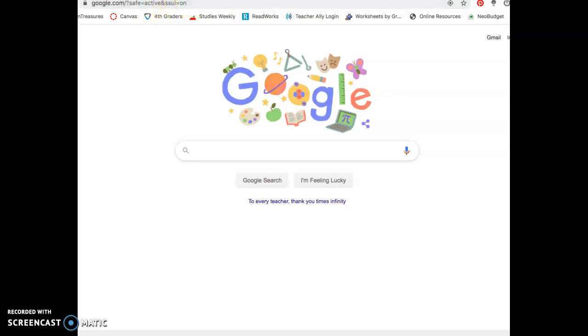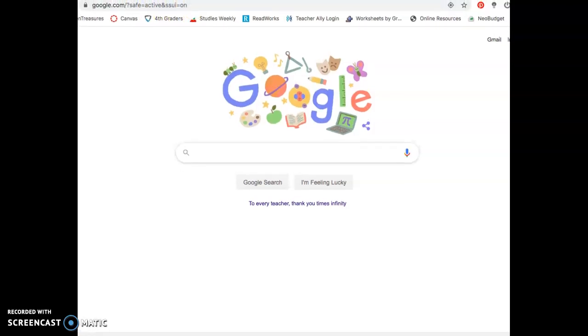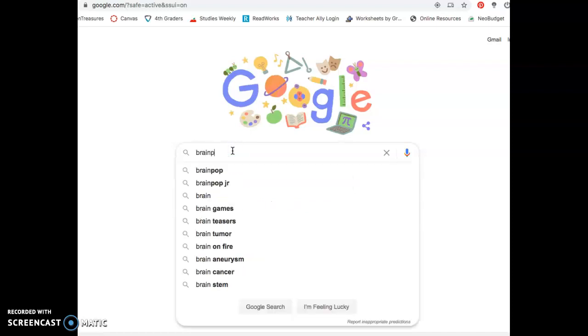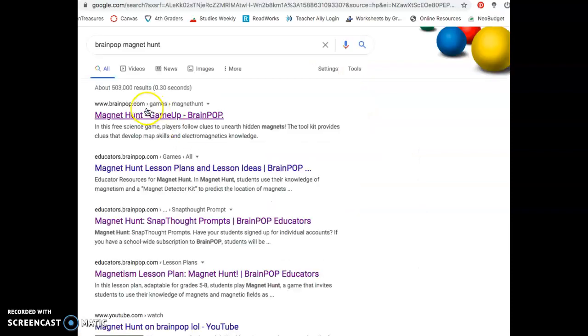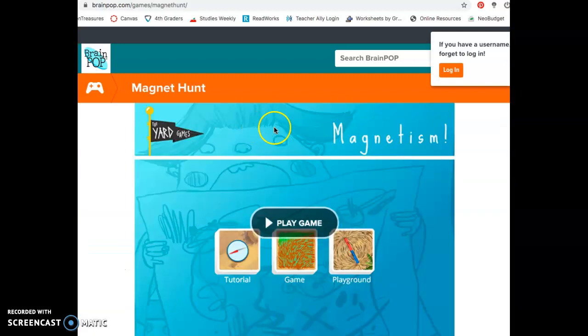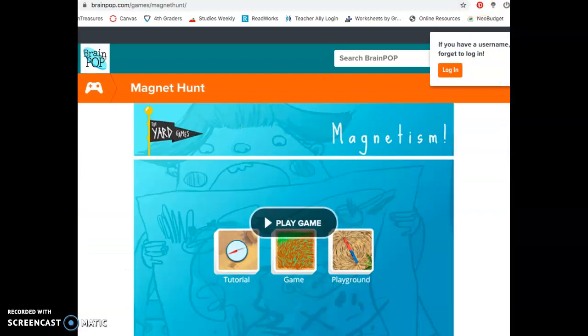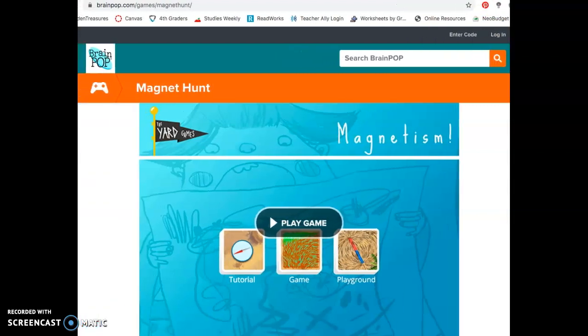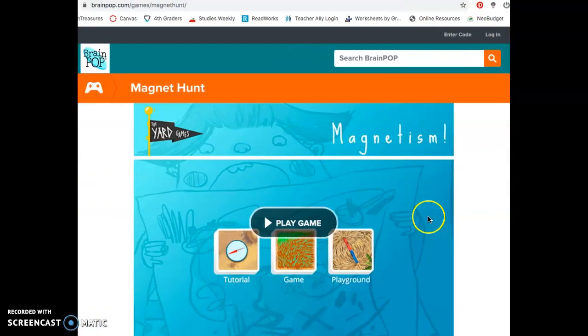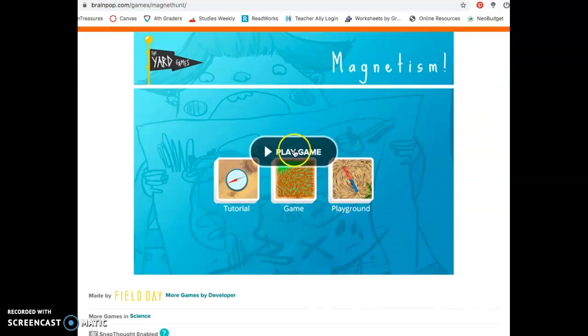Okay, we're going to go to BrainPop's Magnet Hunt game. So in Google, you can simply type BrainPop Magnet Hunt. And then here it is, right, the first thing. And over here, you can just X that little window out. And let's get started.